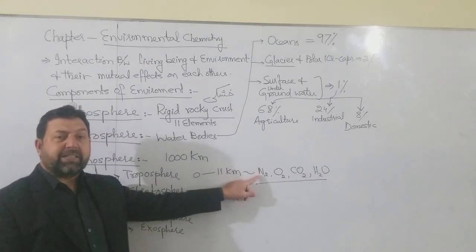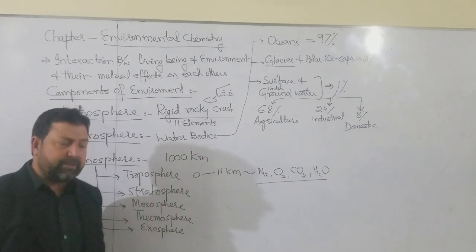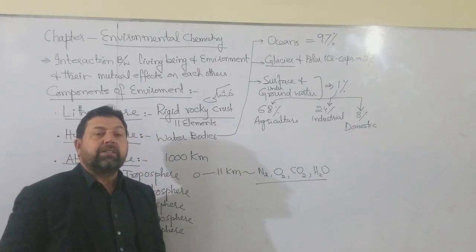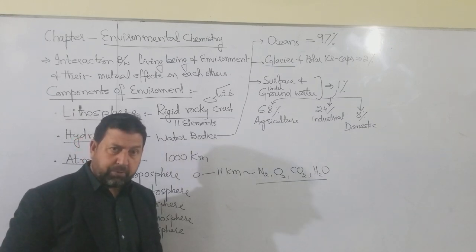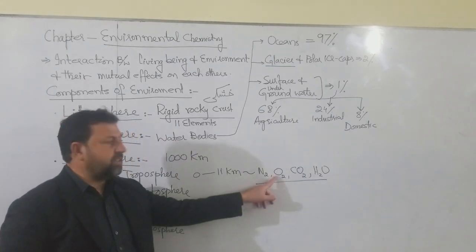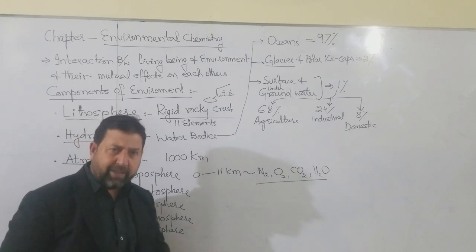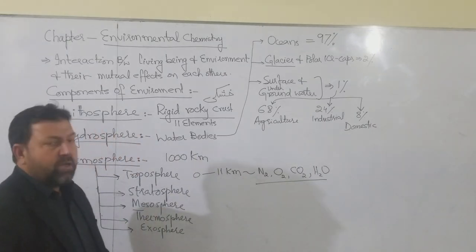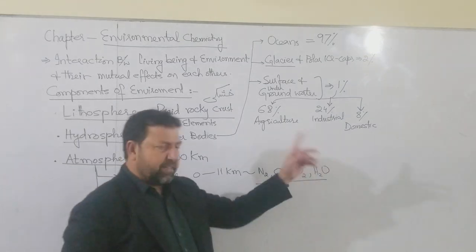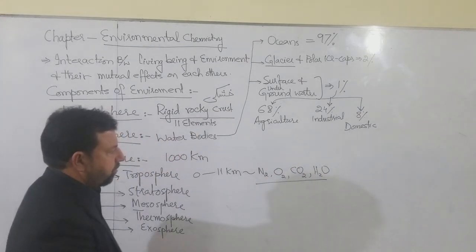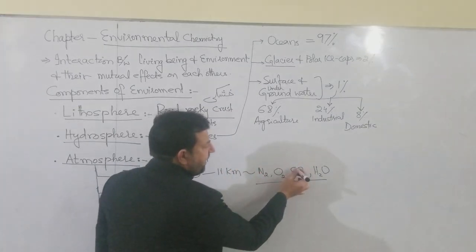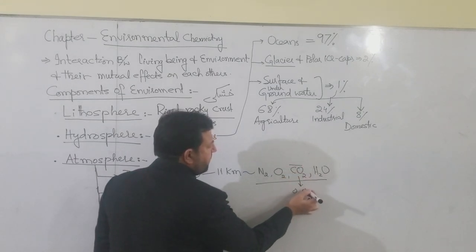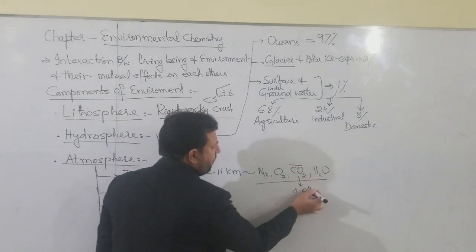Troposphere میں سب سے زیادہ percentage nitrogen کی ہے — تقریباً 78%۔ Oxygen تقریباً 20% سے تھوڑا سا زیادہ۔ اور less than 2% اور چیزیں ہیں، جن میں notable ہے Carbon dioxide — جو صرف 0.04% ہوتی ہے۔